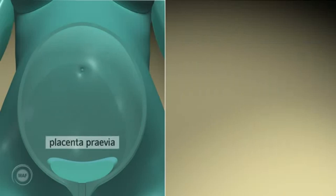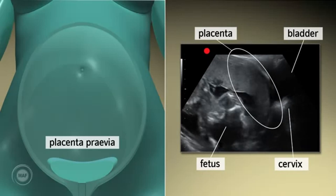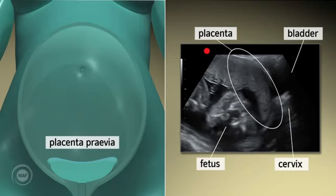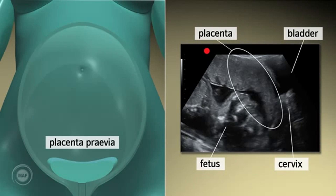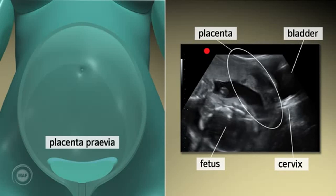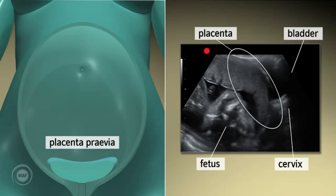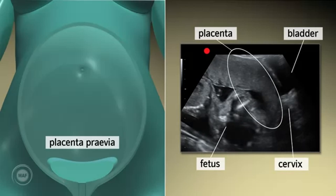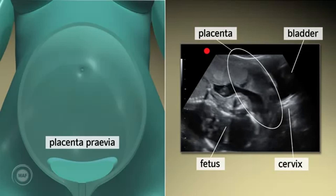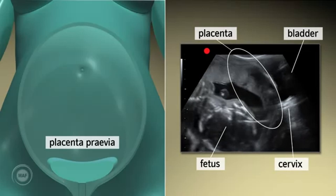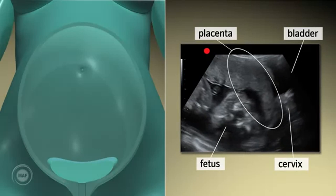Placenta previa. A low anterior placenta will appear between the bladder, which is seen at the extreme right of the screen, and the fetus on the left.